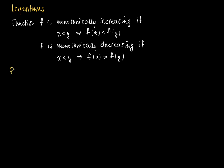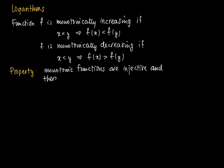There's a property that monotonically decreasing or increasing functions are always injective. So monotonic functions are injective. And we also concluded that injective functions are invertible, because for any element in the range of the function, there is a unique original. And therefore, the function must be invertible.